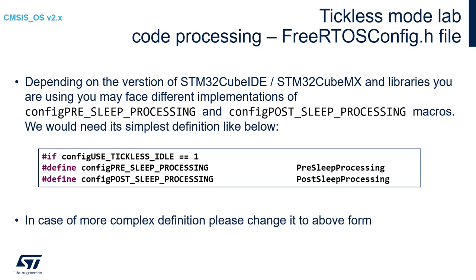Inside, we will use the ITM_SendChar function to send one character passed by arguments, and additionally we will add a newline character. Depending on the version of STM32CubeIDE or STM32CubeMX and the libraries used for code generation, you may face a different implementation of configPreSleepProcessing and configPostSleepProcessing macros. Those macros are defined within FreeRTOSConfig.h file. The simplest configuration is just an empty configuration, and I would recommend replacing any more complex definition with this simplest configuration as shown on the screen.